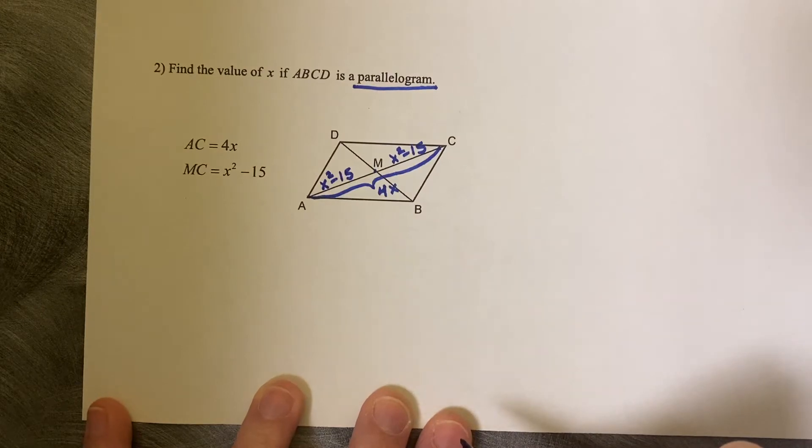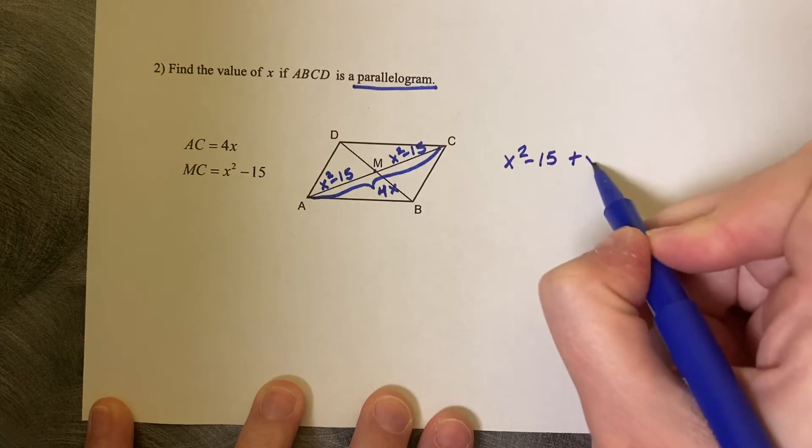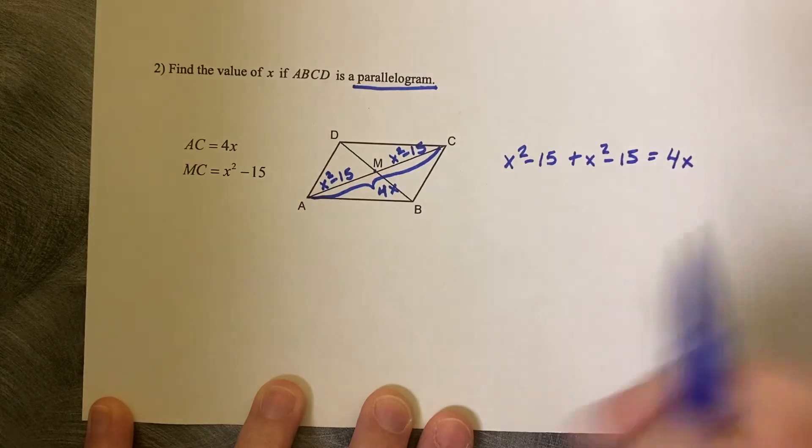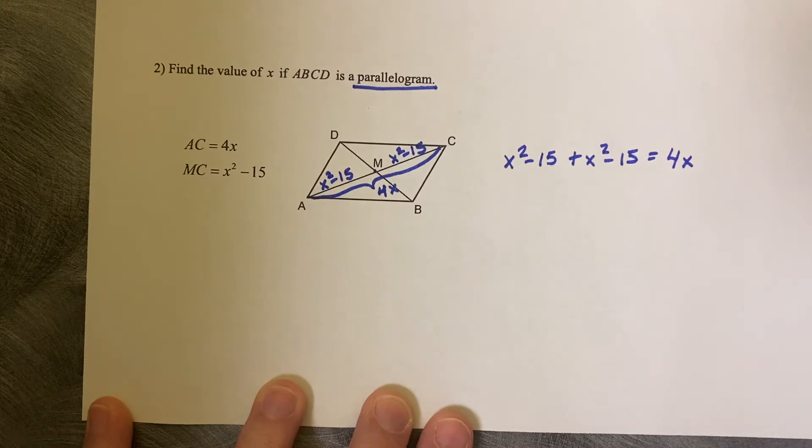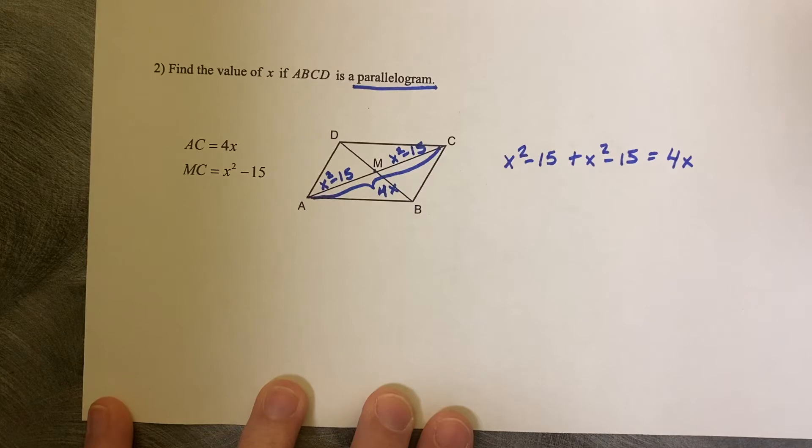So now we can set an equation up. X squared minus 15 plus X squared minus 15 equals the whole length of 4X. This is a quadratic because the X's are squared, so we're going to try and factor. That's the ultimate goal here.